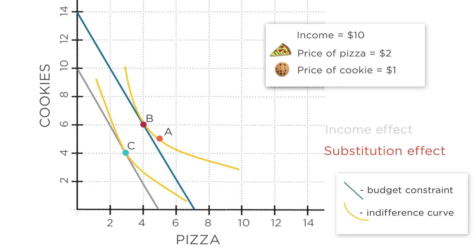See that for this new imaginary budget constraint, consumption of pizzas falls from point A to point B, or from five slices of pizza to four slices. And cookies go from five to six.